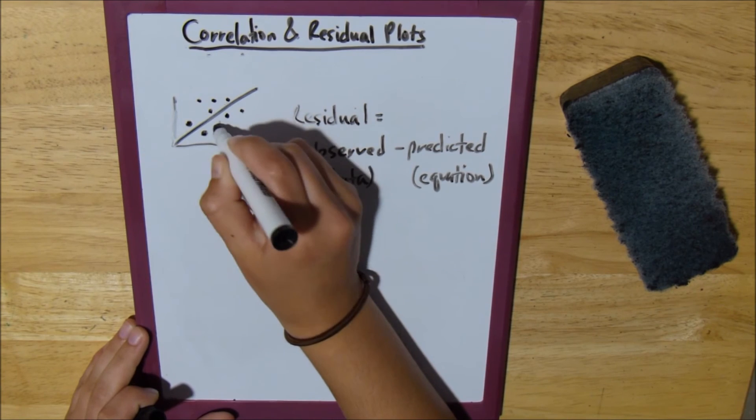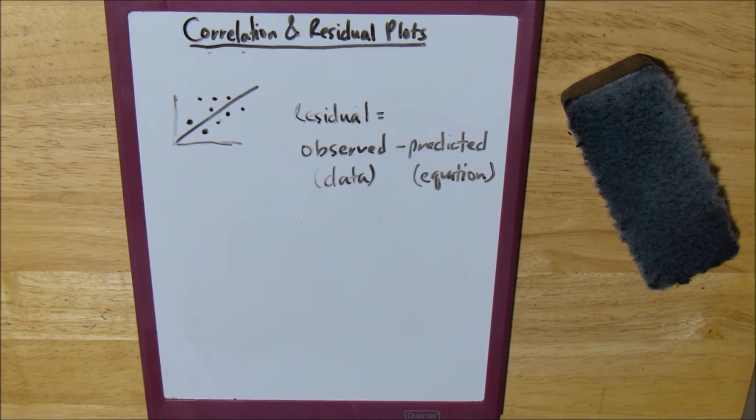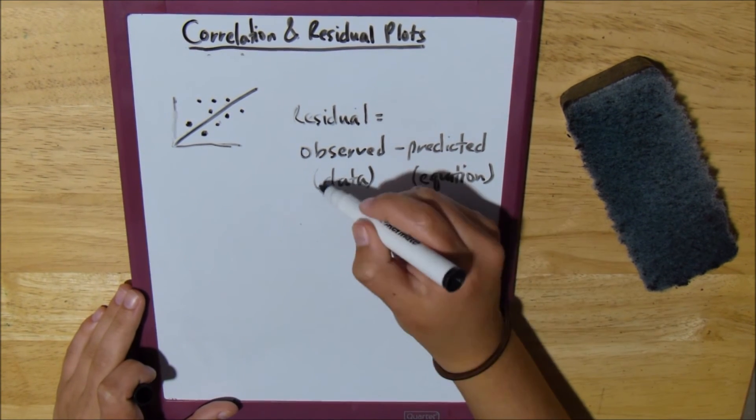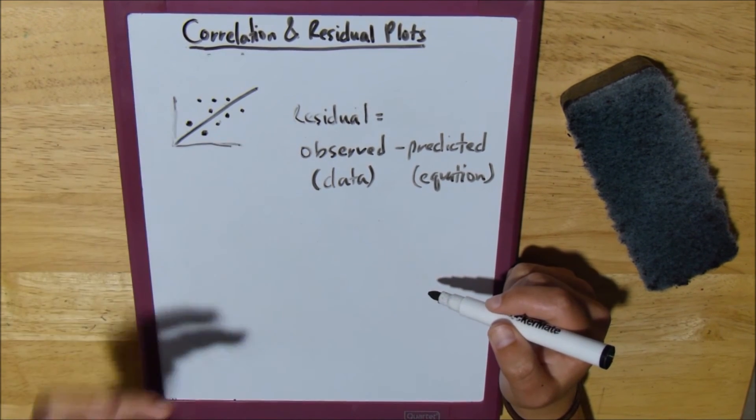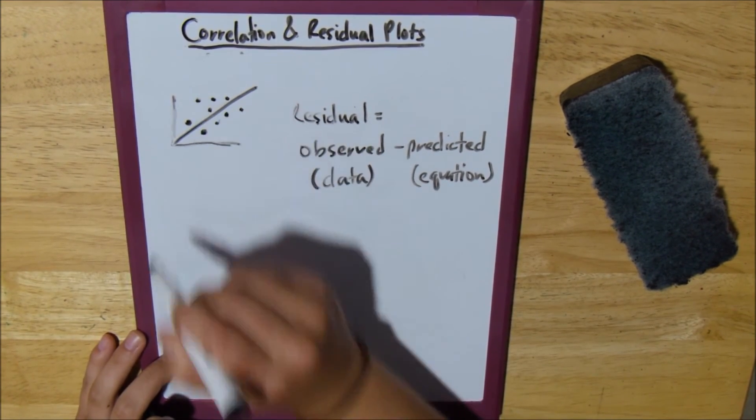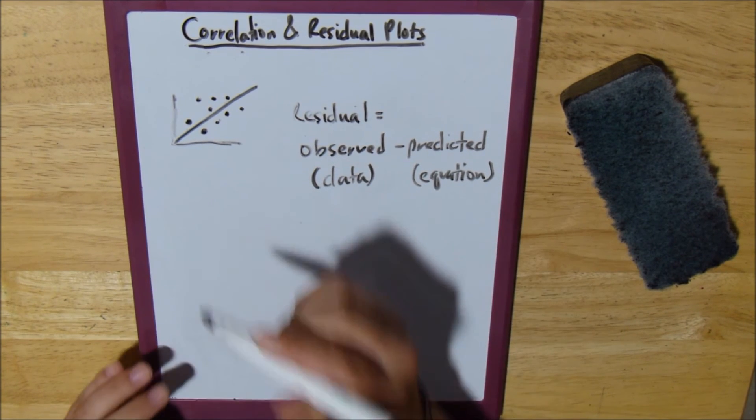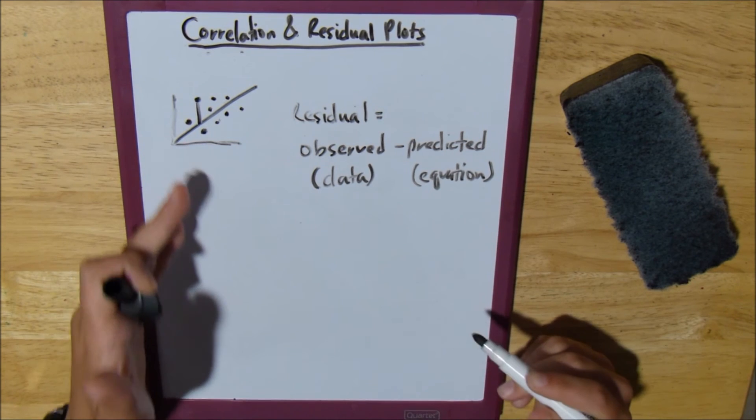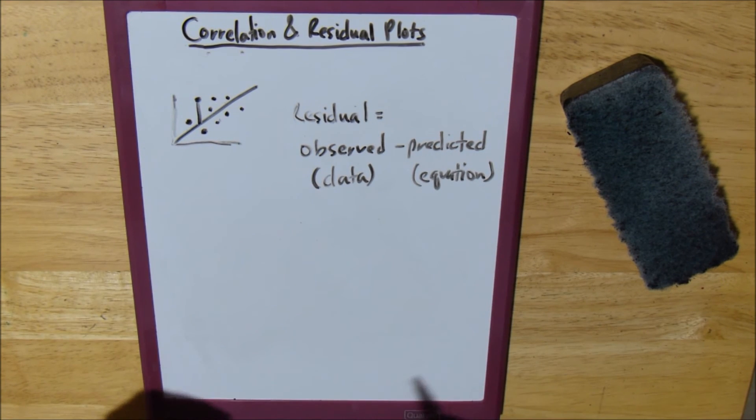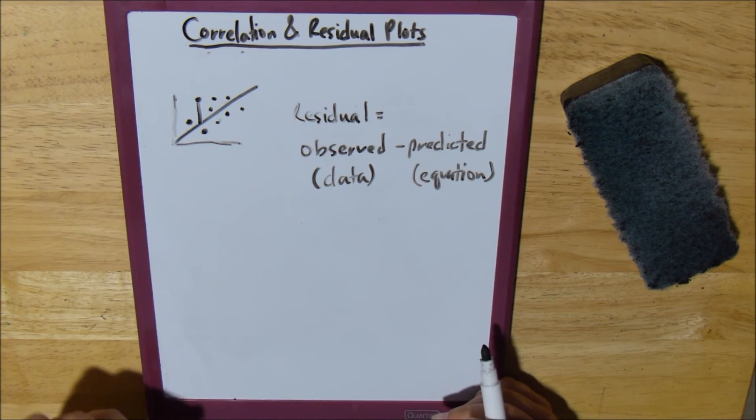We have these points here, and let's take a point above the line first. So, your observed is the point, and then your predicted is the line of best fit. So, you basically just draw a line to the line of best fit from wherever the point was, and that's your residual.